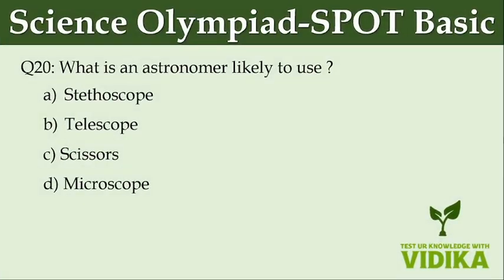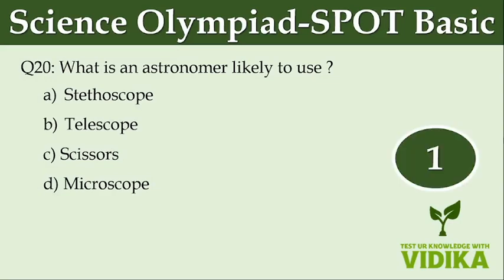What is an astronomer likely to use? Option A: Stethoscope. Option B: Telescope. Option C: Scissors. Option D: Microscope.